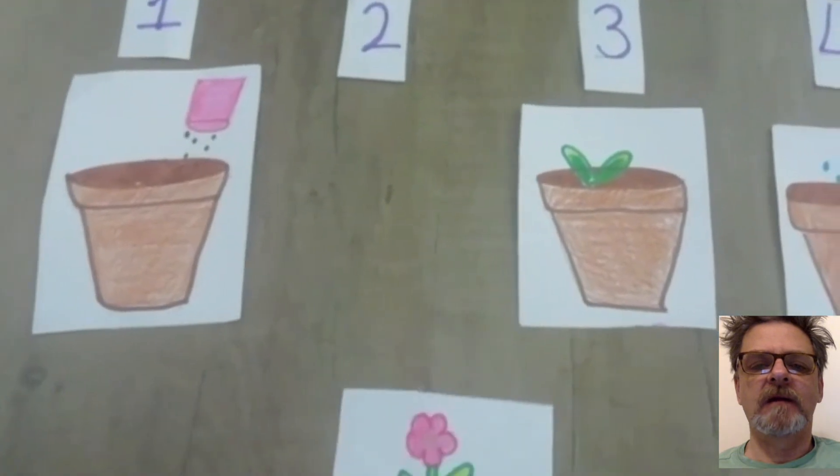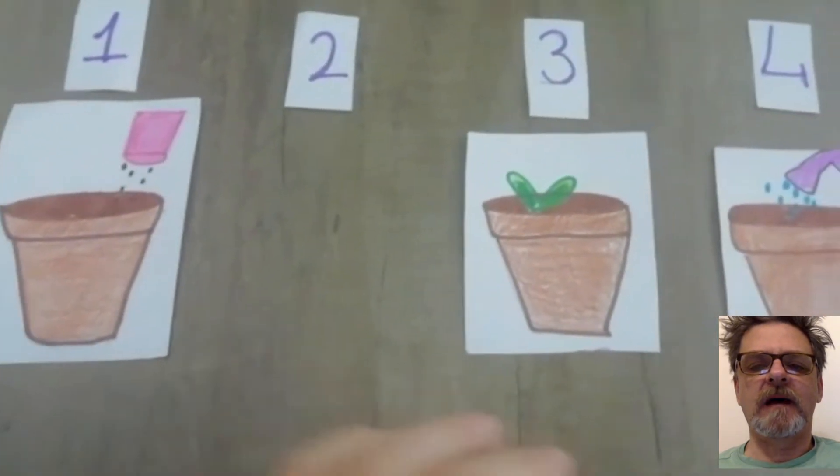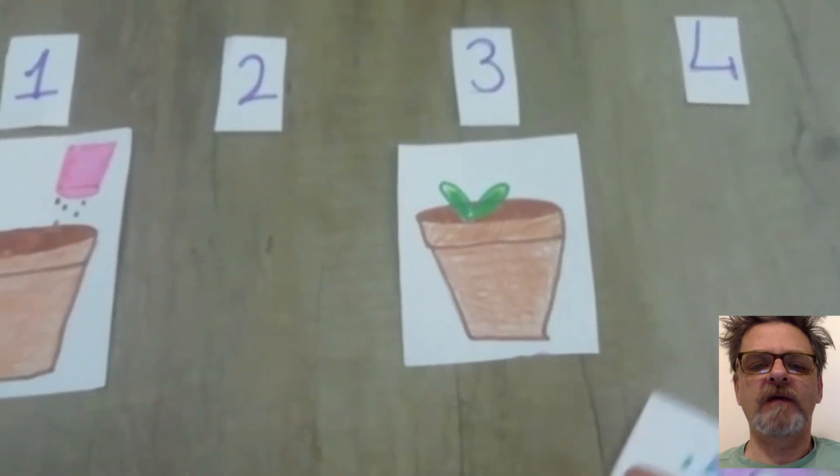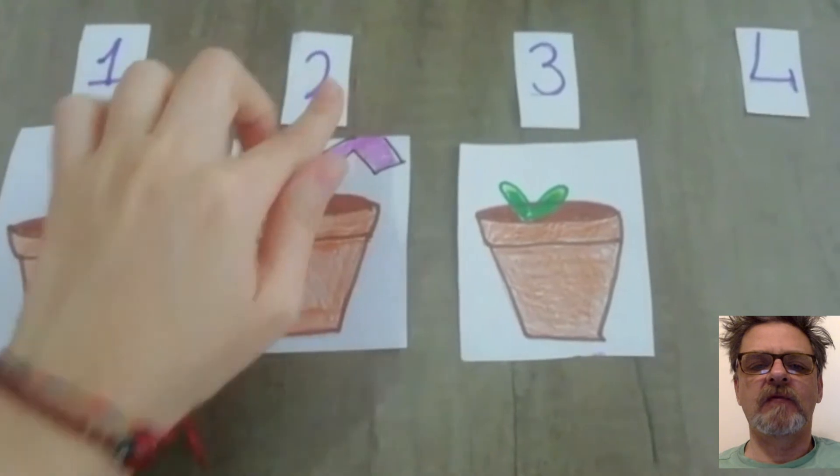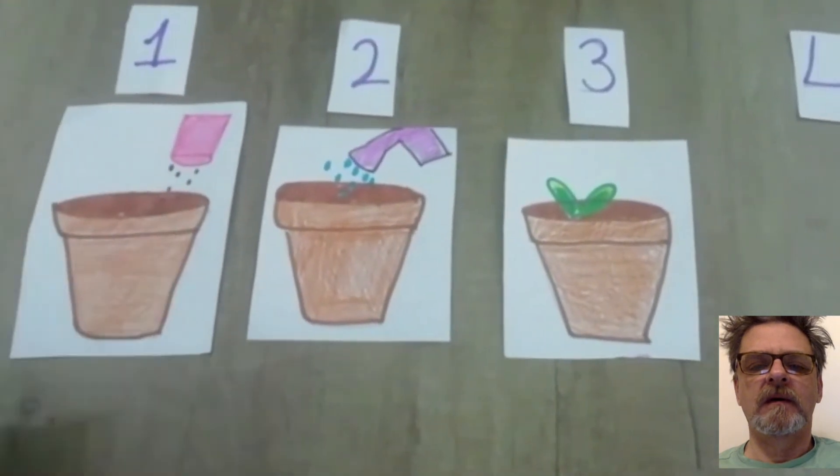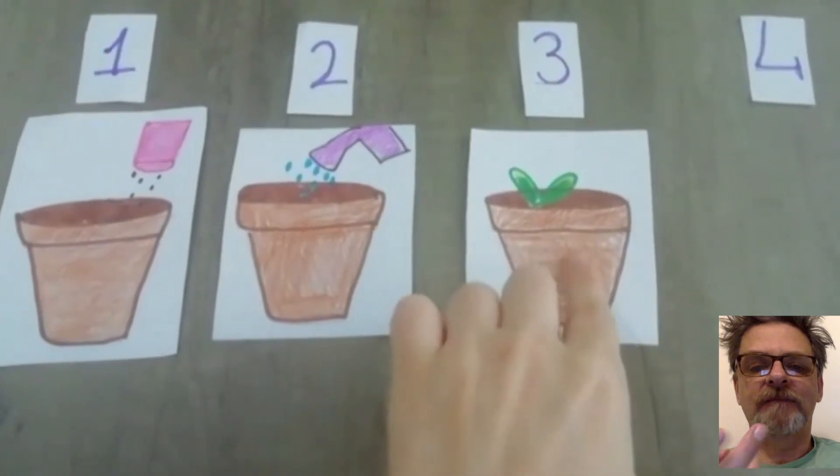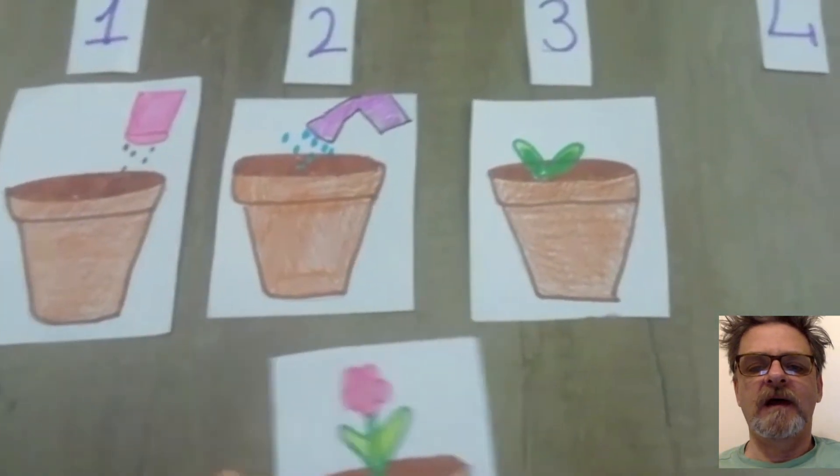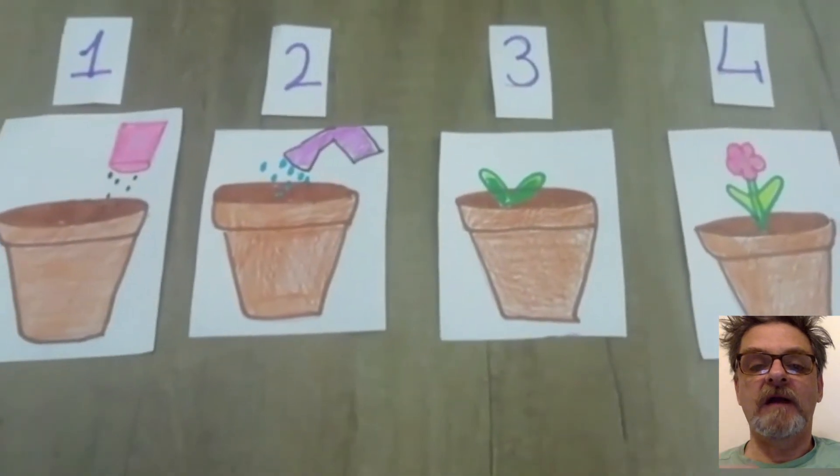Then the second one. Let me think. That's right. We add the water. Number two. And then number three. The plant is sprouting out of the pot. And number four. The plant is fully grown and it's got a flower.